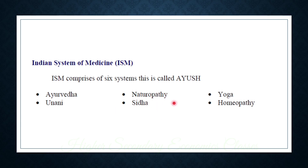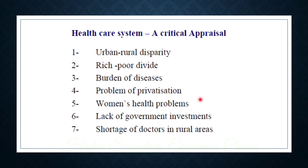The Indian systems of medicine include Ayurveda, Unani, Naturopathy, Siddha, Yoga, and Homeopathy. Critical issues in the healthcare system include urban and rural disparity, rich-poor divide, burden of diseases, problem of privatization, women's health problems, lack of government investment, and shortage of doctors in rural areas.